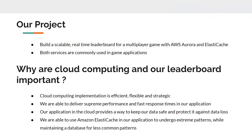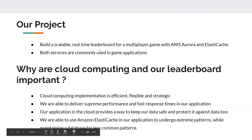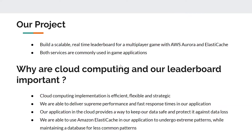In our project, we built a scalable real-time leaderboard for a multiplayer game with AWS Aurora and ElastiCache, which are both very commonly used in game applications. Cloud computing implementation is efficient, flexible, and strategic. Throughout our project, we found that we were able to deliver supreme performance and fast responses. Our application in the cloud allows data to be protected and can prevent data loss. We were able to use Amazon ElastiCache in our application to handle extreme access patterns while maintaining a database for less common patterns.